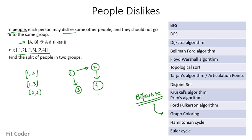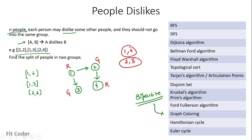We want to split this into two groups. If we assign colors to each vertex — say vertex 1 gets color red — then adjacent vertices cannot have the same color. So vertices 2 and 3 get color green, and then vertex 4 gets color red again. The split of persons would be 1 and 4 in one group, and 2 and 3 in the other. Implementation of the graph coloring algorithm is available in my GitHub repository and a link to the algorithm is in the description.